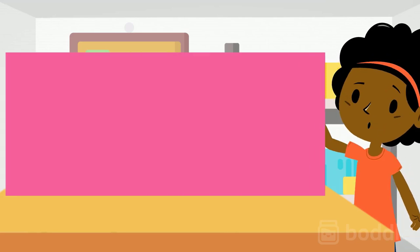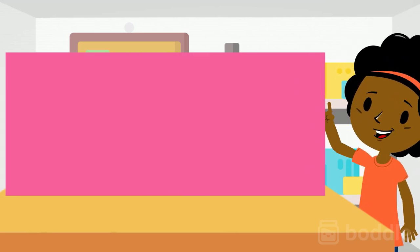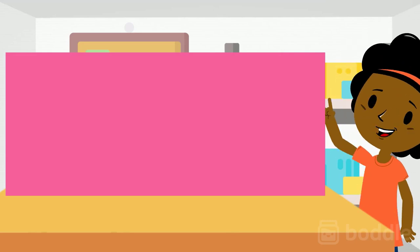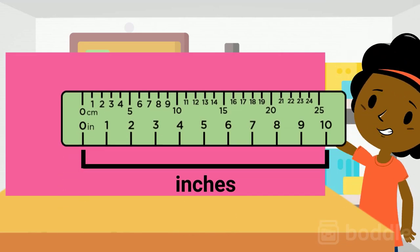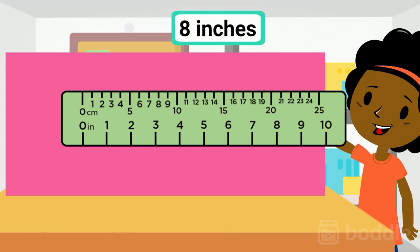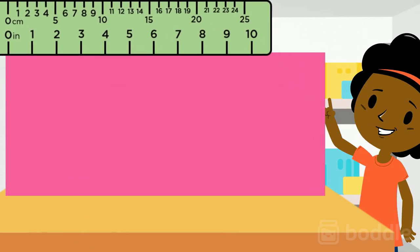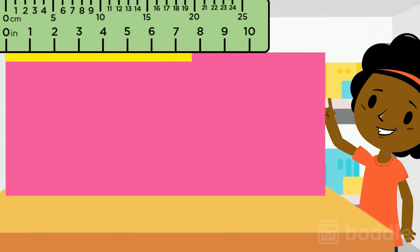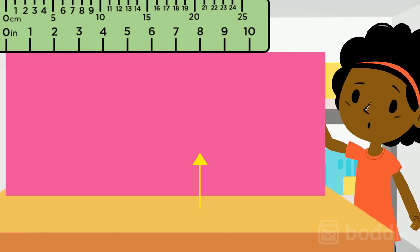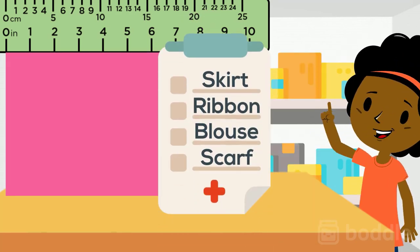First, we need an 8 inch piece of pink fabric for the skirt. Using the inch side of the ruler, let's measure 8 inches by placing the zero marker at the left edge. Find the 8 inch marker and cut the piece. That's a check on Norah's checklist.